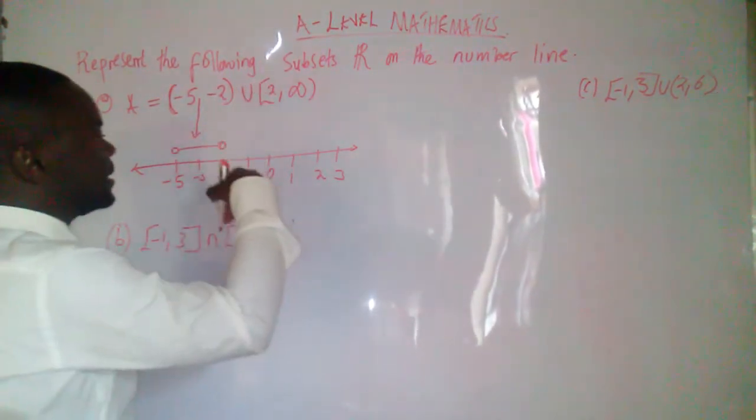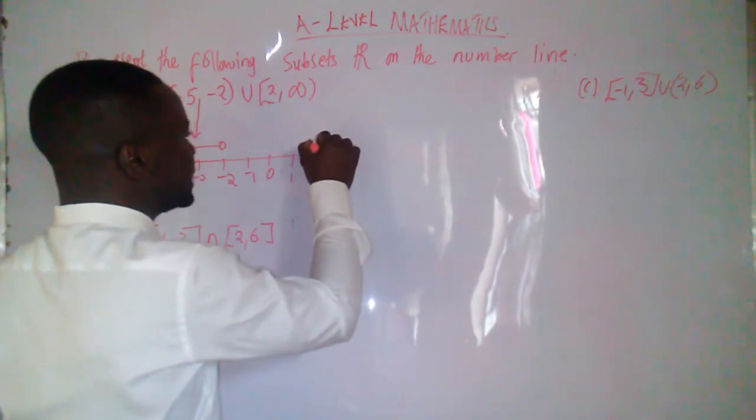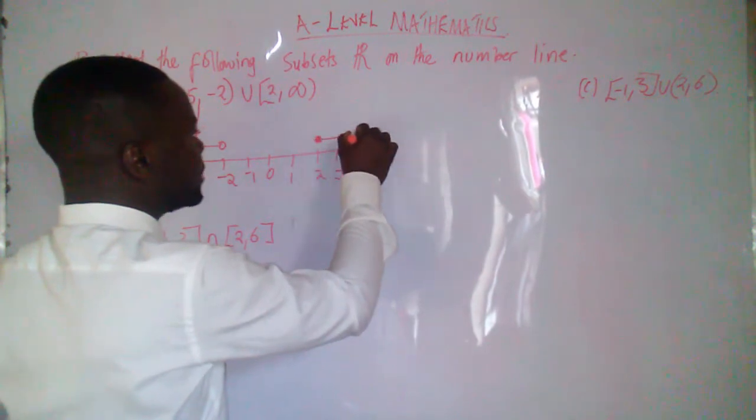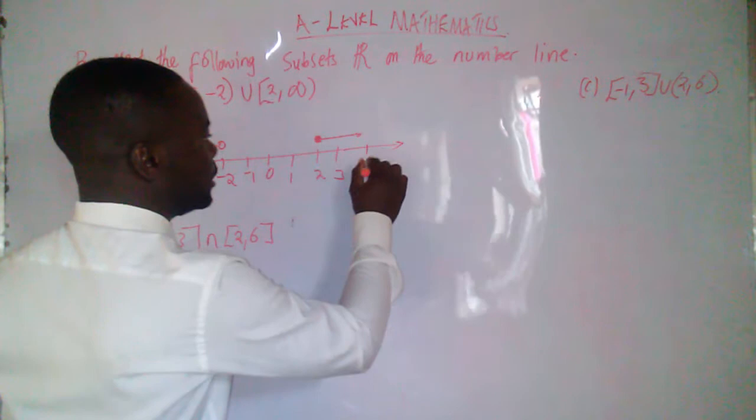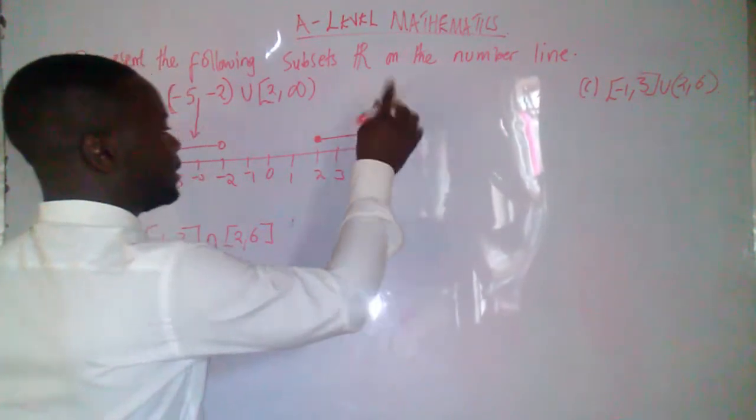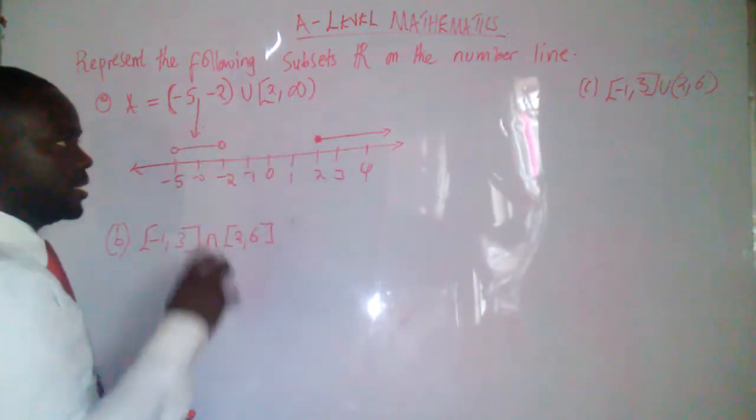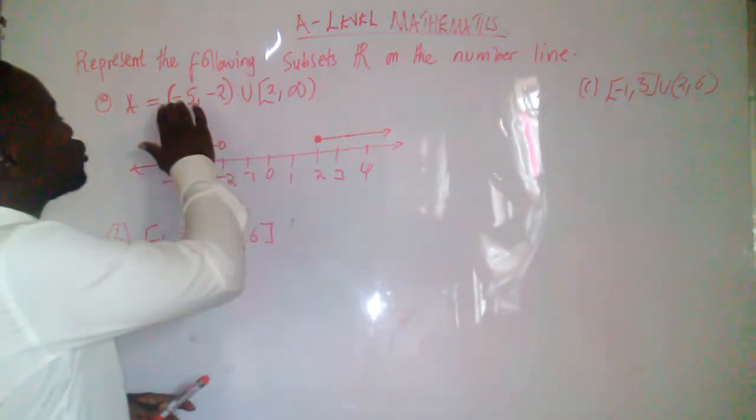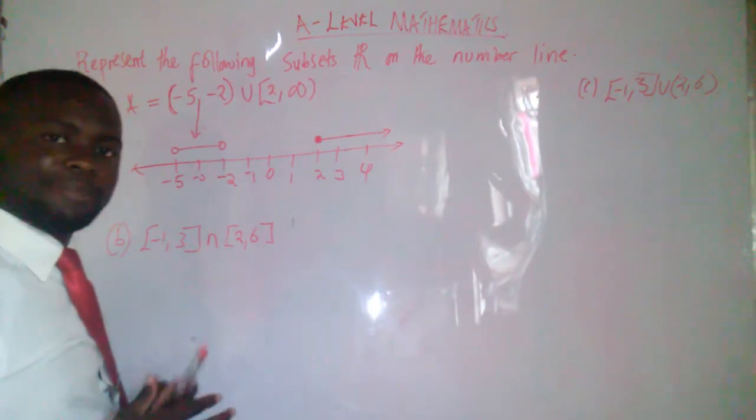Then this part here is saying it's from positive 2. The cross interval of positive 2 going this side. So if we had a 4 here, it would have been like this. So by doing this, it means that we have just drawn these sets on the number line.